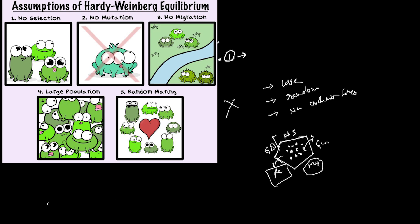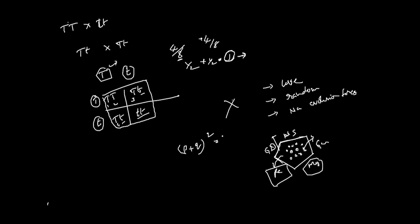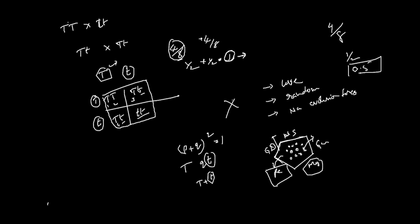P plus Q whole square is equal to 1. P is the dominant allele frequency — the capital T frequency. Q is the recessive allele frequency — the small t frequency. How do you calculate the frequency? It's the number of a particular allele divided by the total number of alleles. So frequency is one-half — in this case, the frequency is 0.5. So 0.5 capital T plus 0.5 small t is equal to 1.